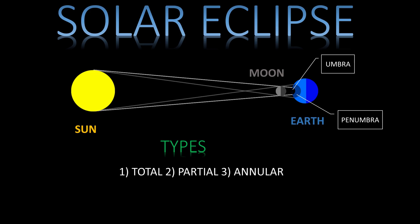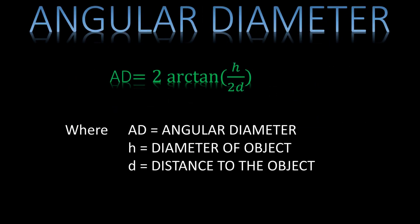In order to calculate the duration of totality, we must understand some basic concepts. The first is the angular diameter of an object — it is the angle made by an object at the eye of an observer. It is calculated by the formula as shown, where AD is the angular diameter, H is the diameter of the object, and D is the distance to the object.